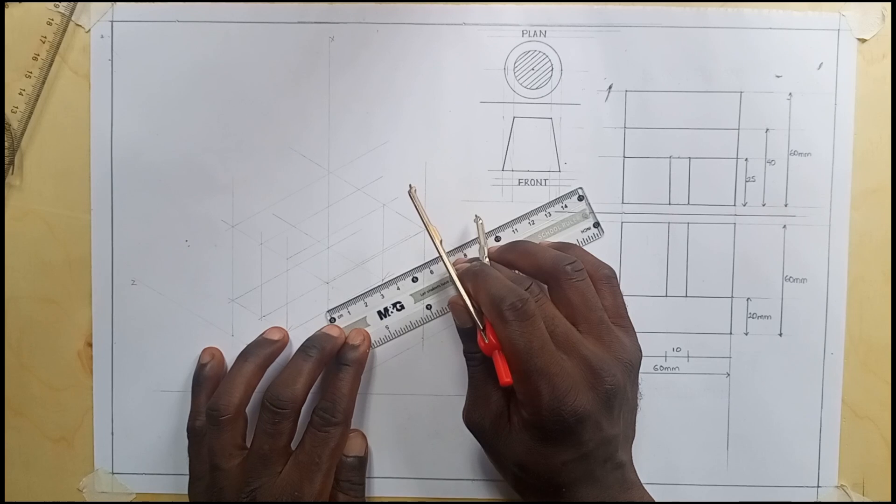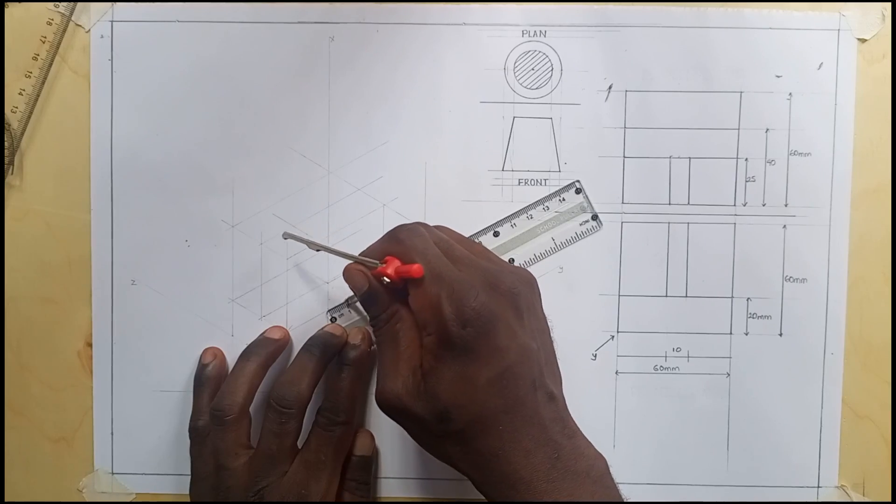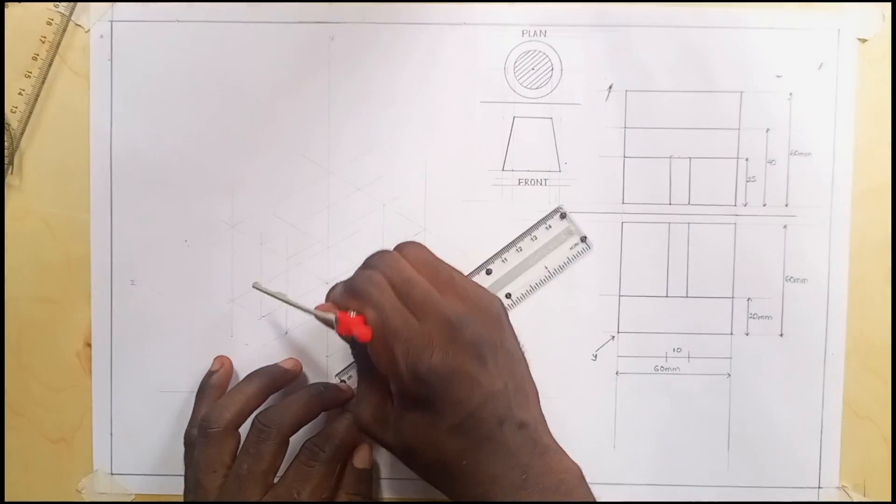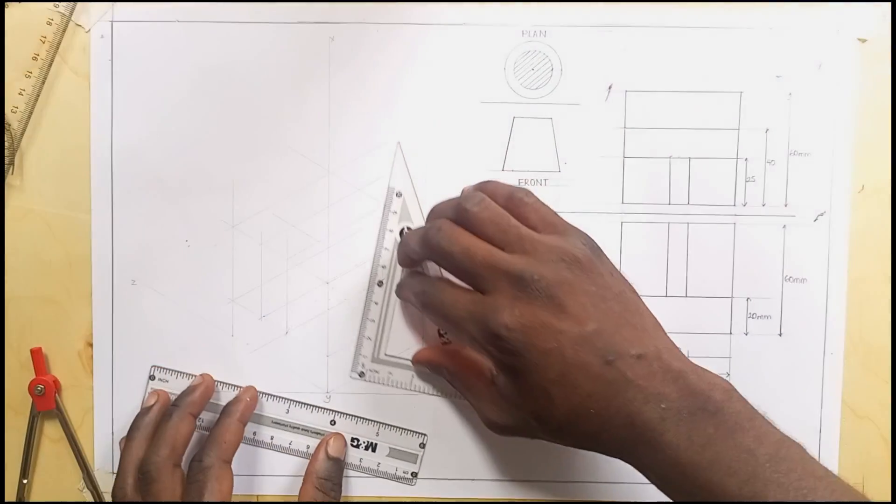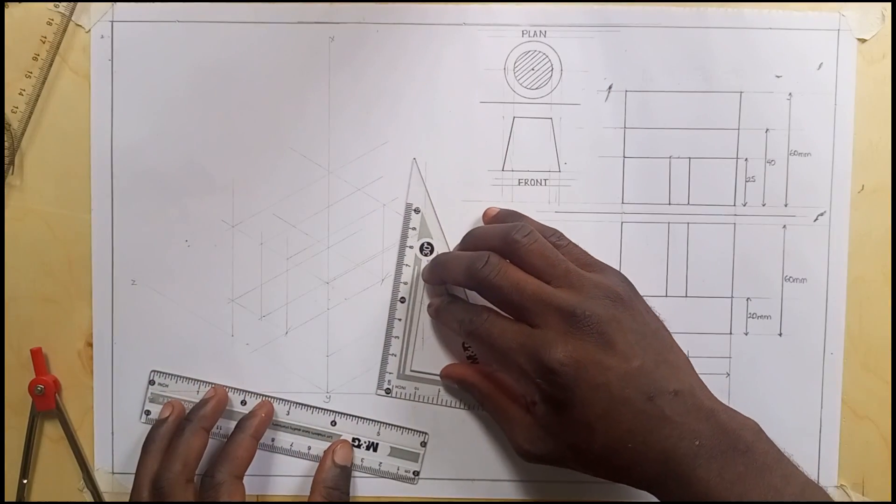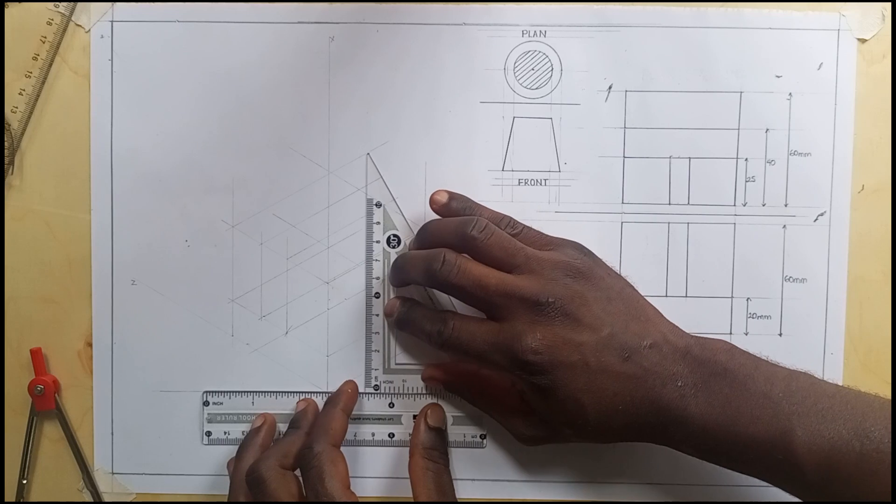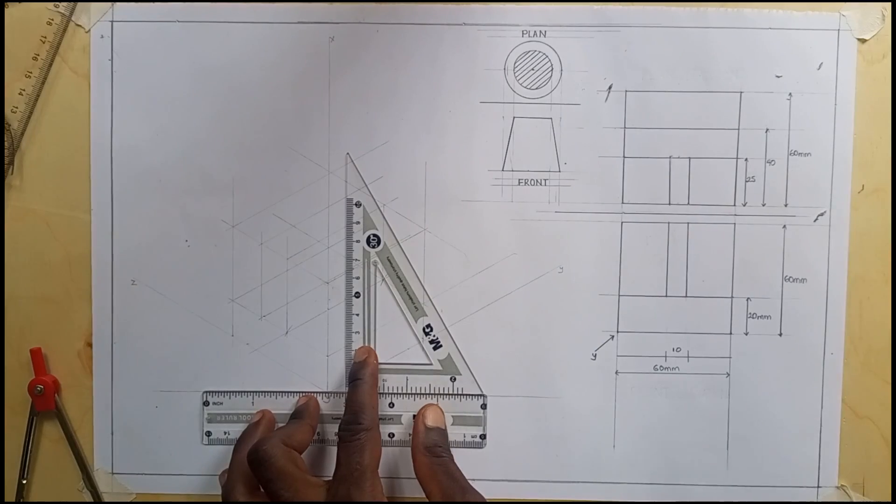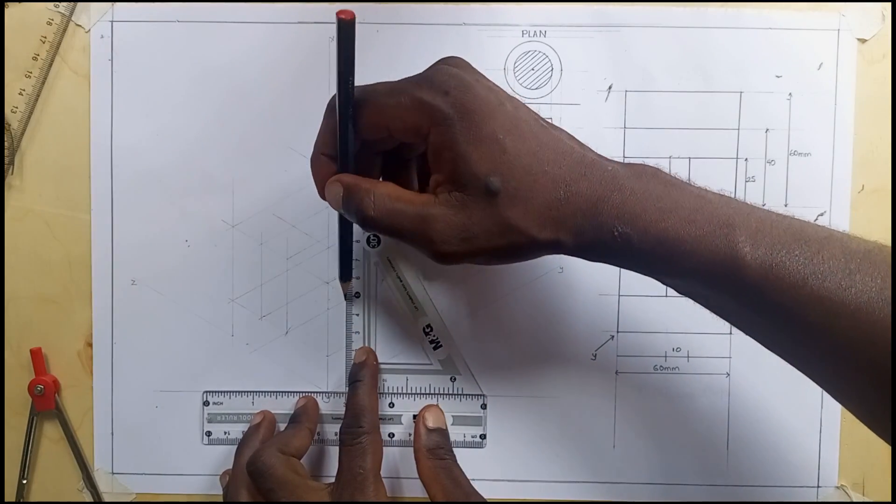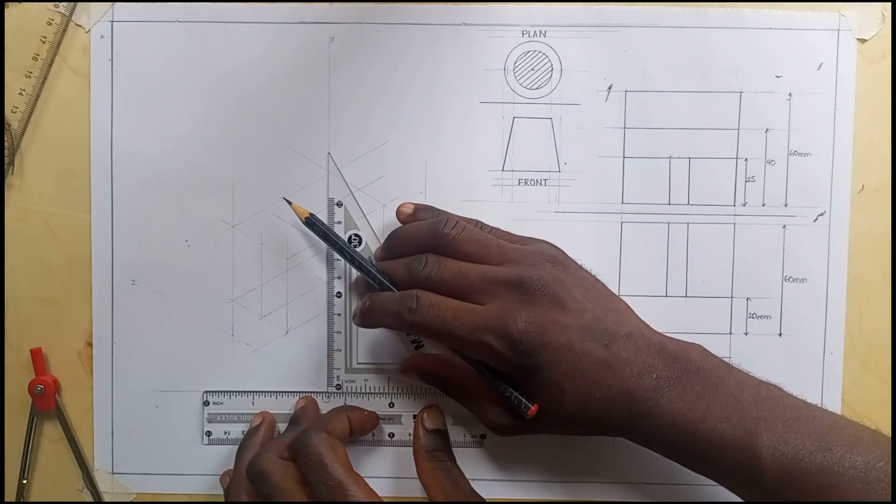Then after, measure off 10, it's also there. So parallel to the X axis, I'll draw up that line.